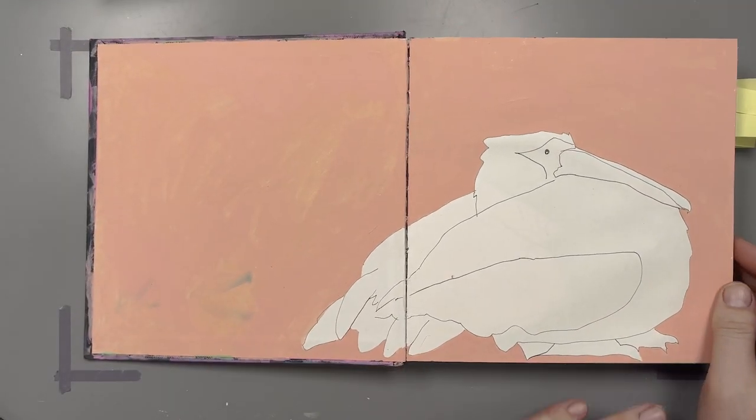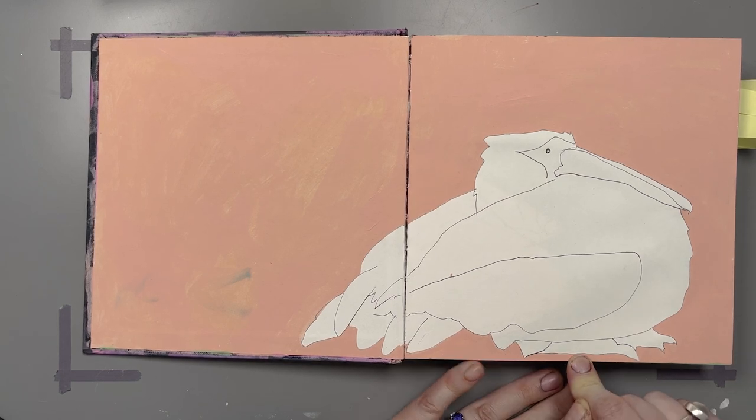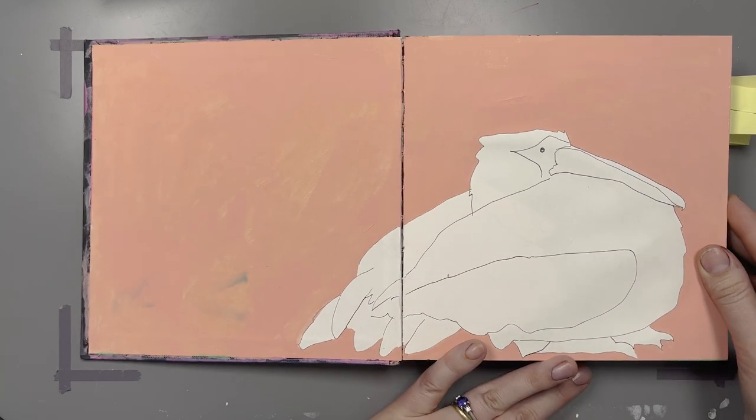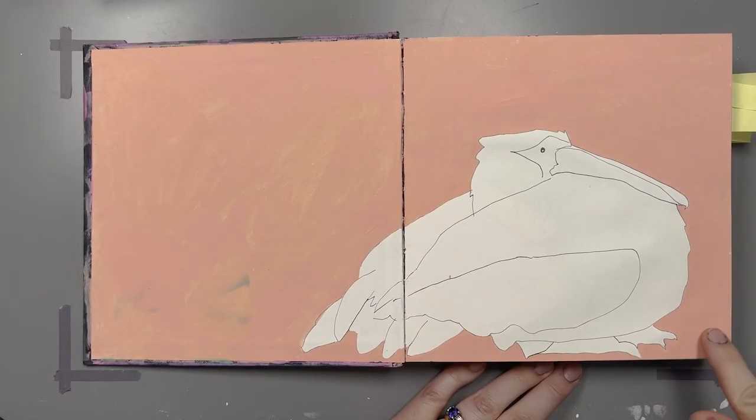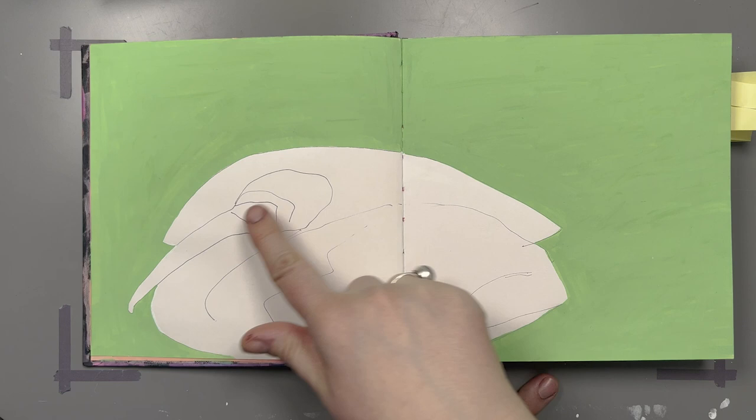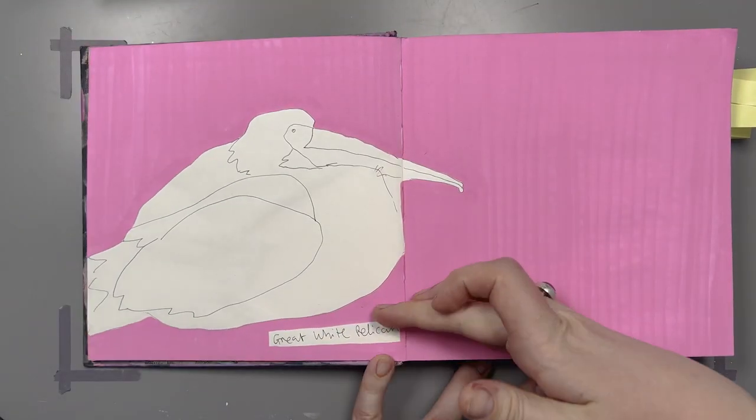This is also a sketch that I did at the zoo. I thought that this was quite successful—this was a pelican. I wanted to keep it, so I just came in afterwards when I got home and painted in the background. That was another bird that was sitting down. I think that worked quite well.